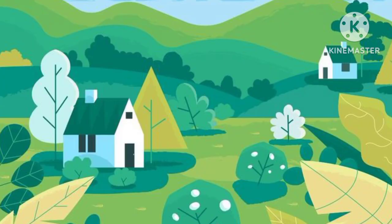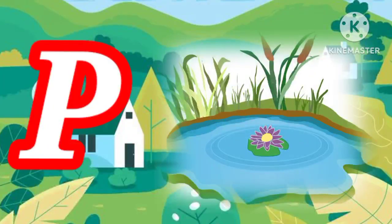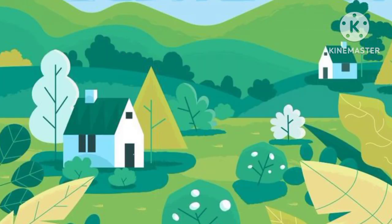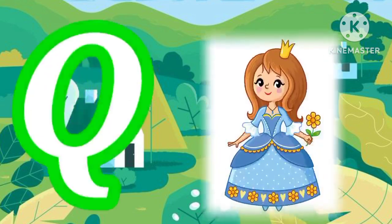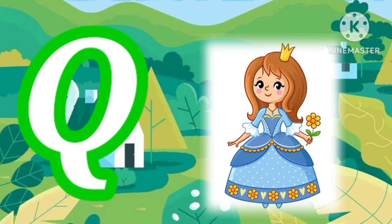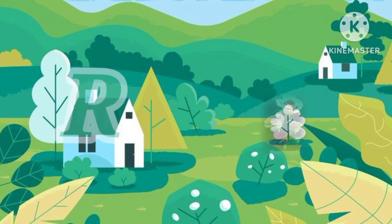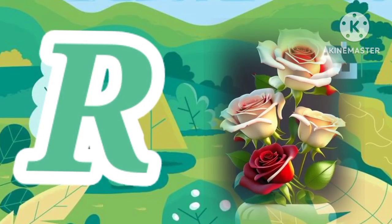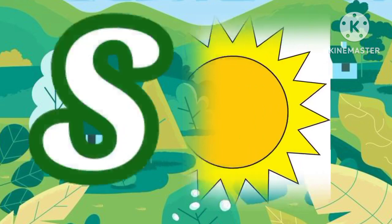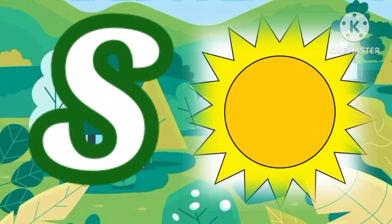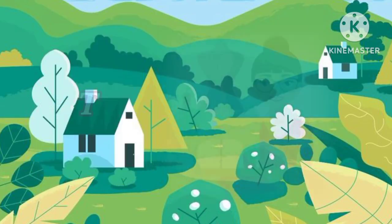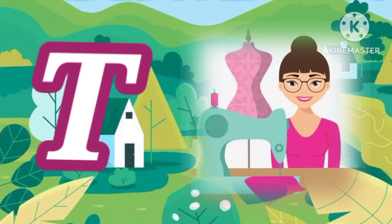P for bond, U for queen, R for rose, S for sun, T for tailor.